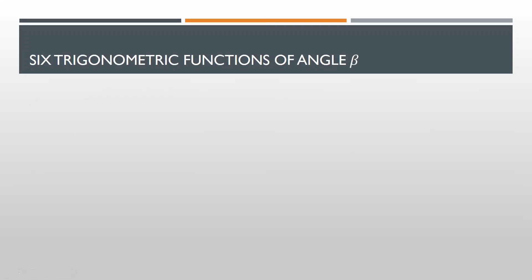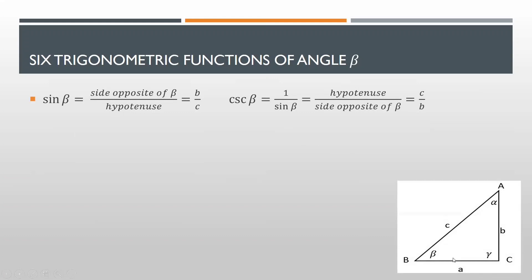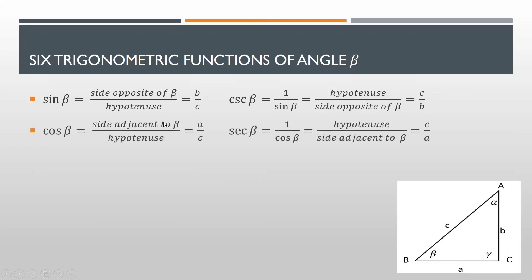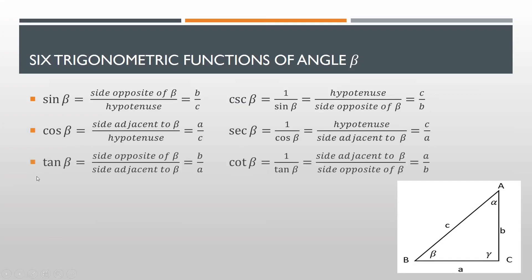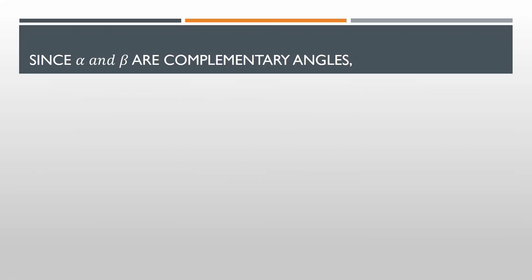Then, the six trigonometric functions of angle beta: the side opposite of beta is side b, and the hypotenuse is c. So for sine beta, it's b over c, and for cosecant, it's c over b. For cosine of angle beta, that is side adjacent to angle beta, which is a, over hypotenuse, which is c. So for cosine beta, that is a over c, and for secant, that is c over a. And lastly, for tangent of angle beta, that is the side opposite over the side adjacent, so that is b over a, and for cotangent, that is a over b.